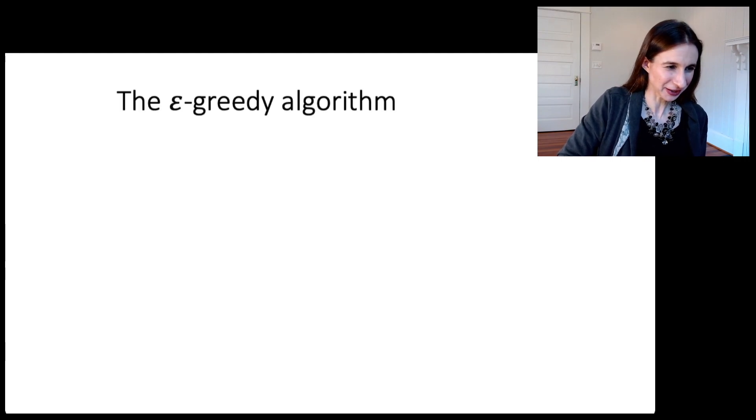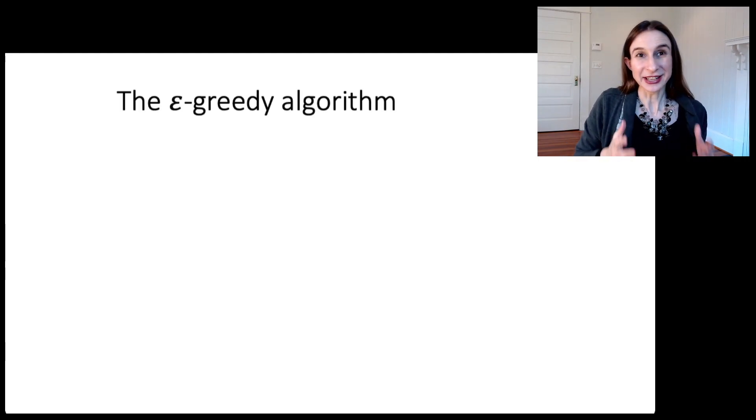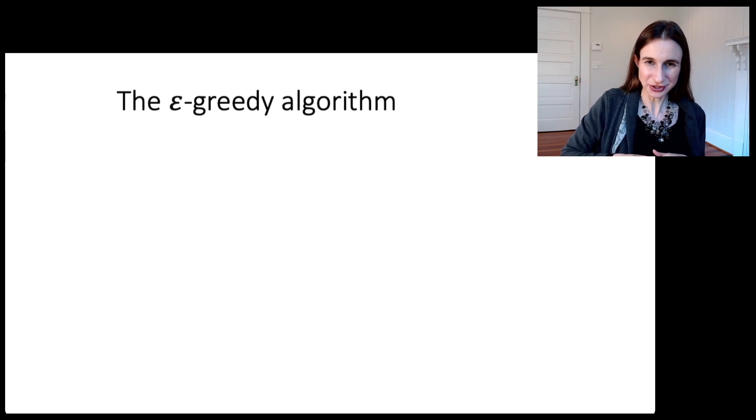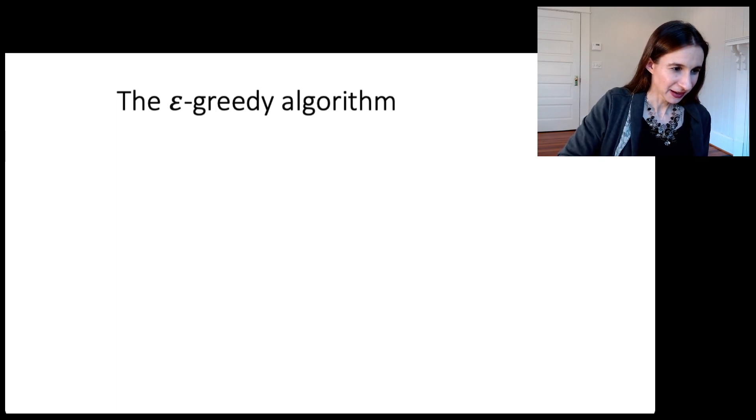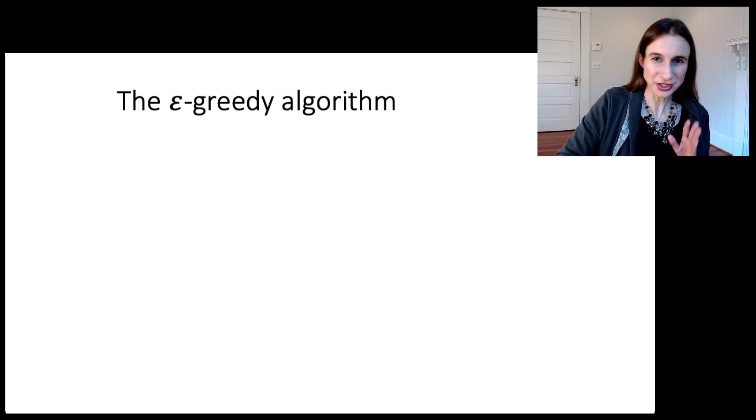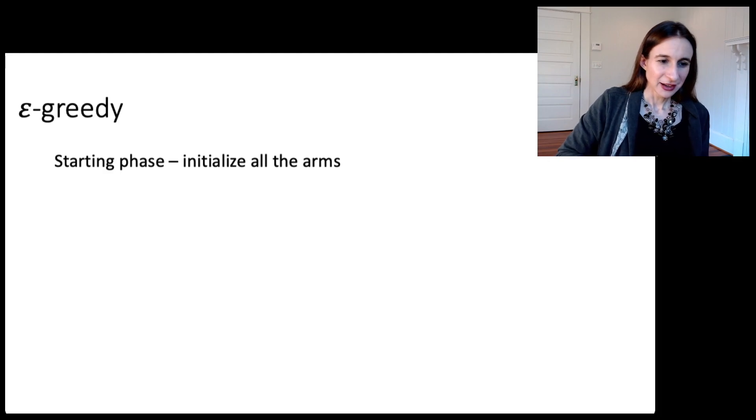So that's how these algorithms work, or at least that's how UCB works. Let's talk about the other algorithm that I want to introduce today, which is epsilon greedy. So epsilon greedy is an alternative to UCB. It's a different multi-armed bandit algorithm. Just as simple though. In the starting phase, we again initialize all the arms.